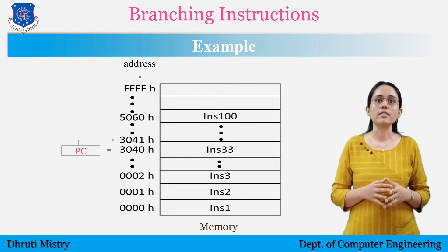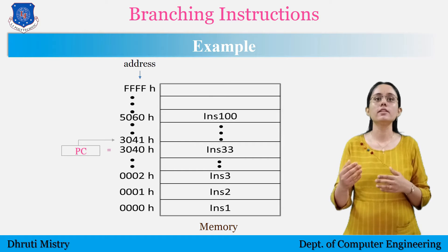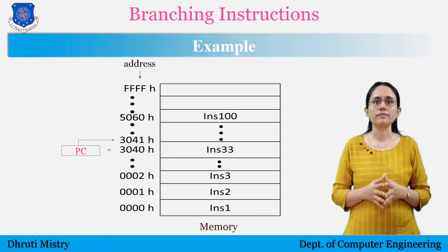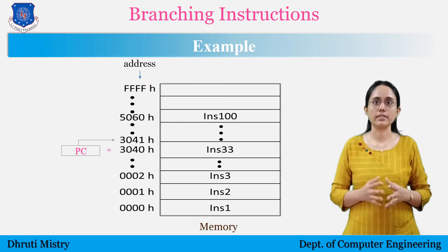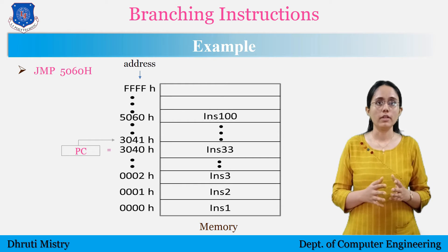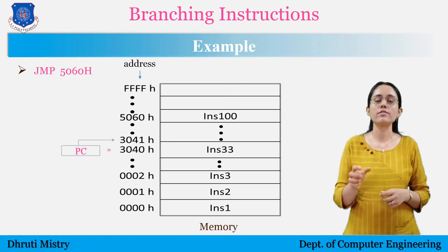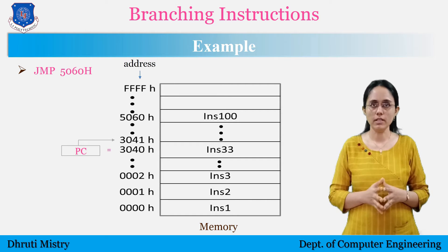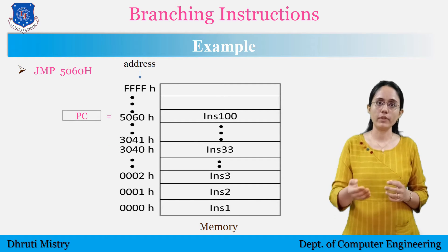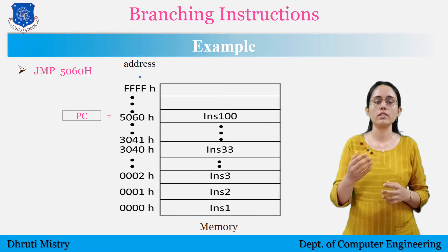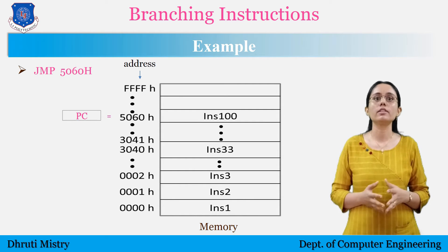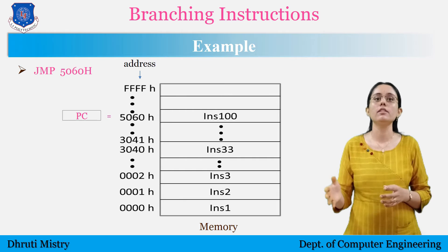The instructions are automatically executed in sequence. When a jump instruction executes — for example, JMP 5060H — it puts the new address 5060H into the PC. Now the processor fetches the instruction from that new address that follows the jump instruction in memory, instead of executing the instruction in sequential memory.